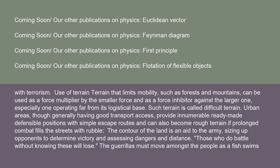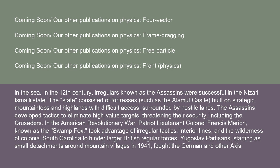Such terrain is called difficult terrain. Urban areas, though generally having good transport access, provide innumerable ready-made defensible positions with simple escape routes, and can also become rough terrain if prolonged combat fills the streets with rubble. "The contour of the land is an aid to the army — sizing up opponents to determine victory and assessing dangers and distance. Those who do battle without knowing these will lose. The guerrillas must move amongst the people as a fish swims in the sea."